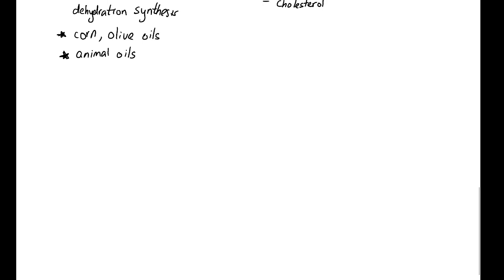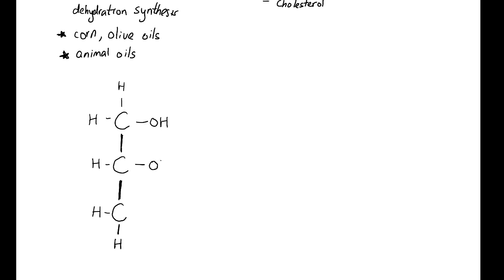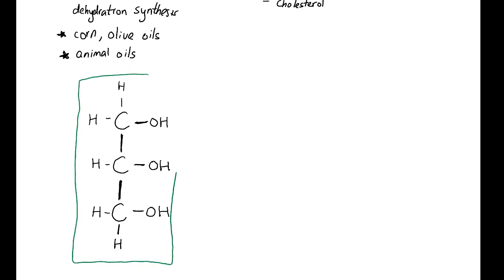Today we're going to focus on the structure of triglycerides. Glycerol is a carbon molecule made of three carbon atoms bonded together through covalent bonds. Each carbon can have four covalent bonds, and each carbon has a hydroxyl group. In a glycerol, every one of them has four bonds, so everyone's happy. A glycerol is going to bond to three fatty acids — this is the glycerol molecule shown in the green box.